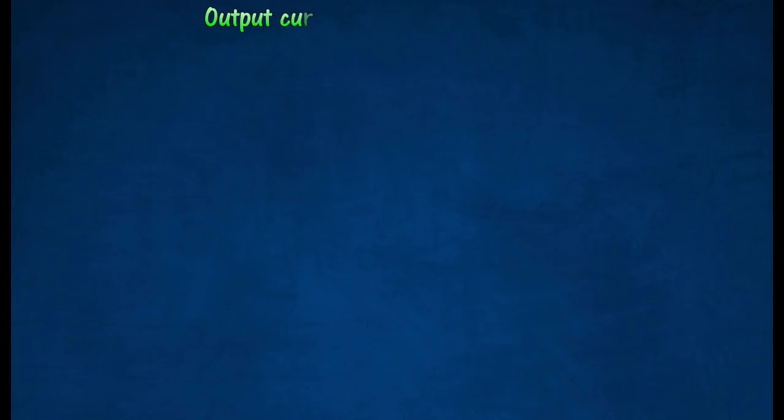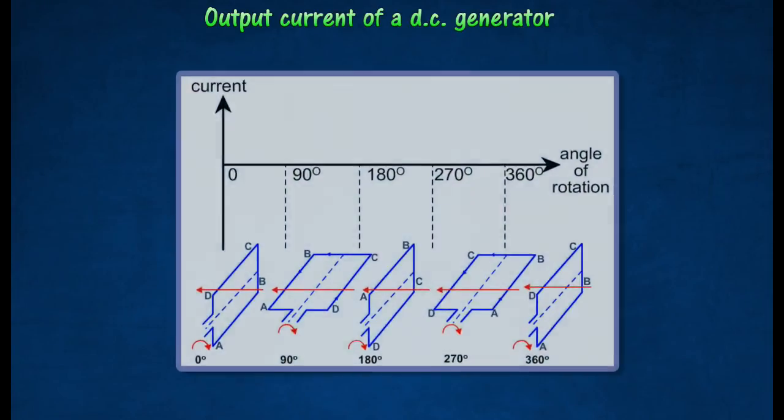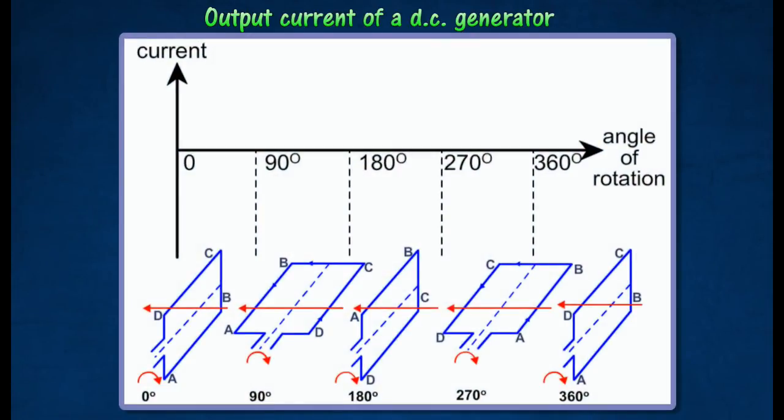The following graph shows the magnitude and the direction of the induced current changes according to the position of the coil. The magnitude of the induced current in a direct current generator varies with the position of the coil. Even though the magnitude of the induced current varies, its direction through the external circuit remains the same.